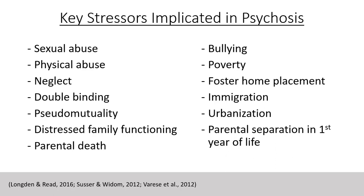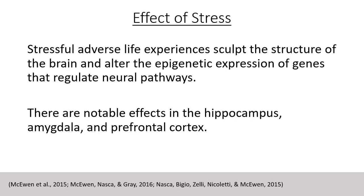Double binding is a dilemma in which an individual receives two or more conflicting messages. This may be seen in situations of abuse, where there is a message of love and affection but at the same time there is physical, sexual, or emotional abuse. Pseudo mutuality is a relationship in which surface harmony and agreement cloaks deep and damaging interpersonal conflict.